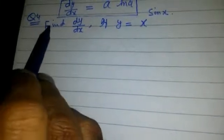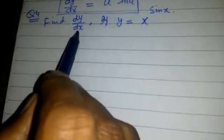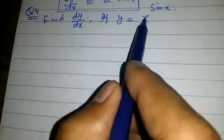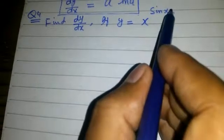Today we have a question: find dy by dx if y is equal to x to the power sin x. Let's solve this.